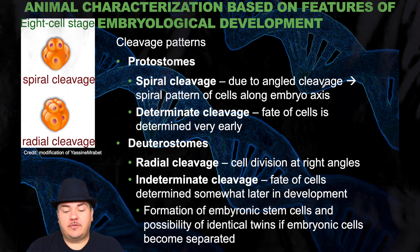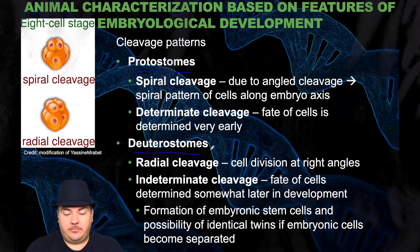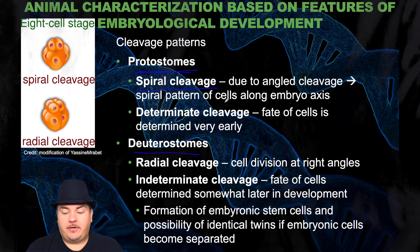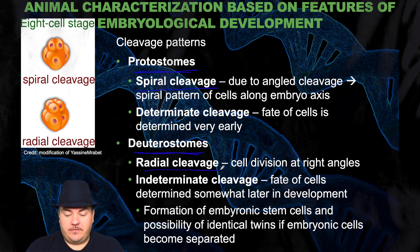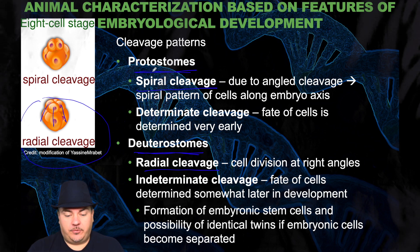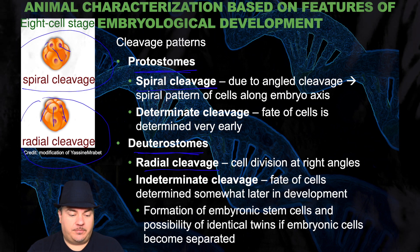Another way of distinguishing these organisms is based upon the cleavage patterns. Protostomes have spiral cleavage — due to angled cleavage, they form a spiral pattern of cells along the embryo axis. Whereas deuterostomes have radial cleavage — cell division at right angles. In deuterostomes with radial cleavage, the cells are kind of lined up on top of each other, whereas in protostomes with spiral cleavage, they are spiraling and not lined up.